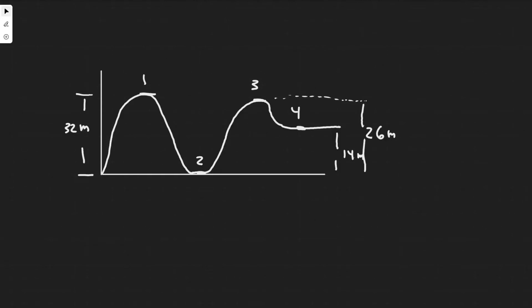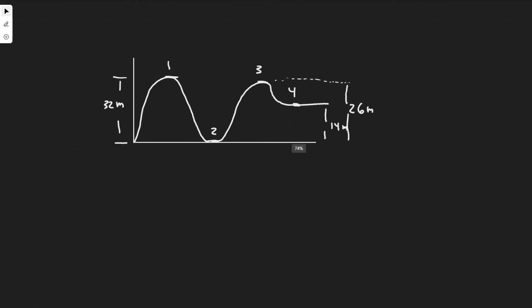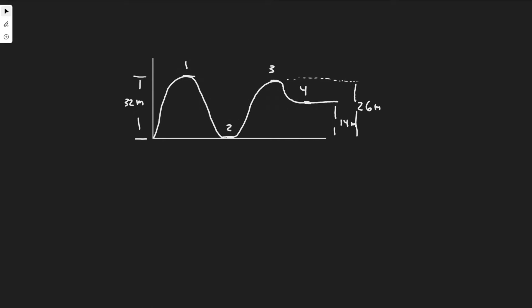In this problem we're told a roller coaster car shown in this figure is pulled up to point one where it is released from rest. Assuming no friction, calculate the speed at points two, three, and four. So basically we're going to find the speed here, speed here, and speed here. The things you need to know to solve this problem.